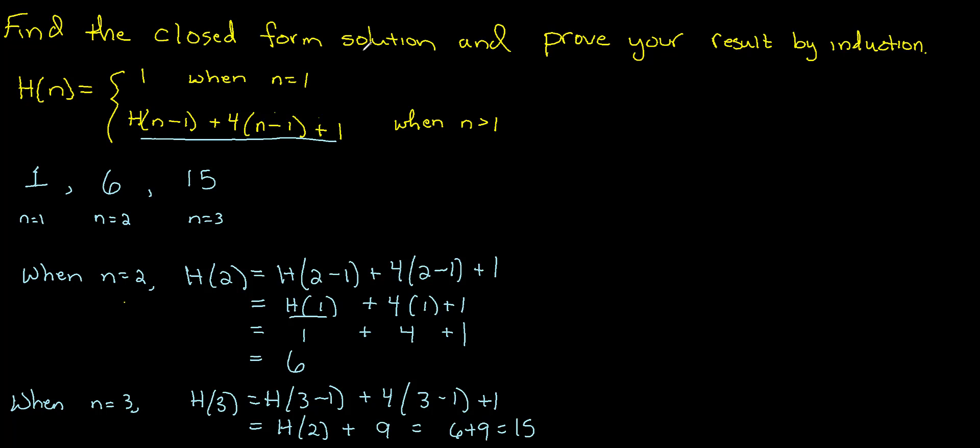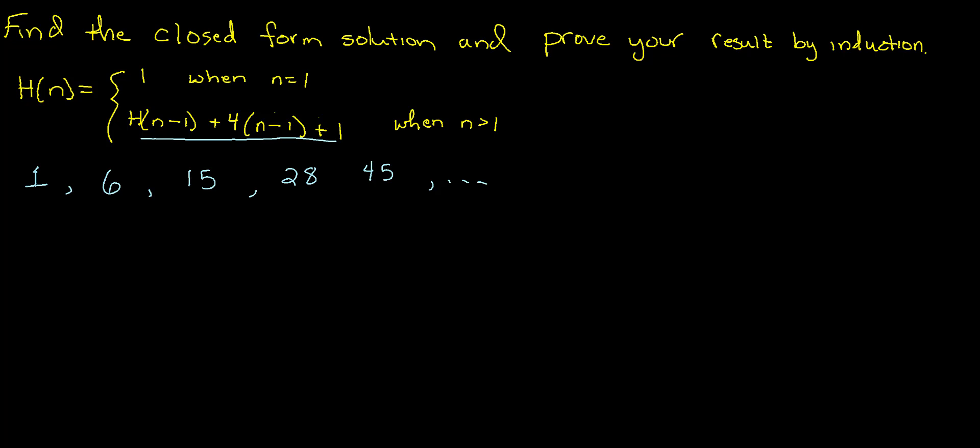And if you keep going with this process, you'll find the next term in the sequence when n is 4 you'll get 28, and you'll get 45 for the fifth term. And you could keep going, but that's enough for now. So we have taken our recursively defined sequence and listed out the first several terms.